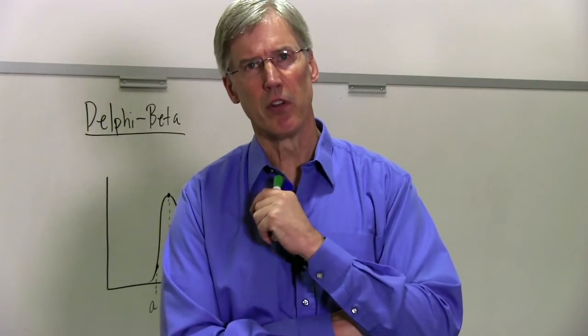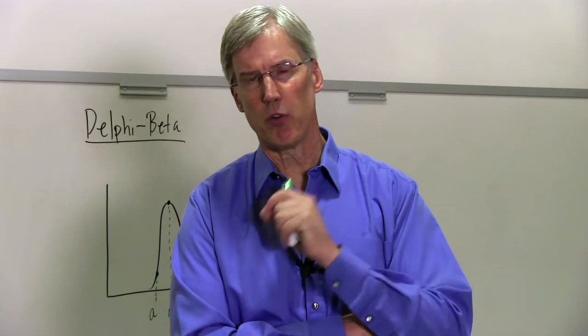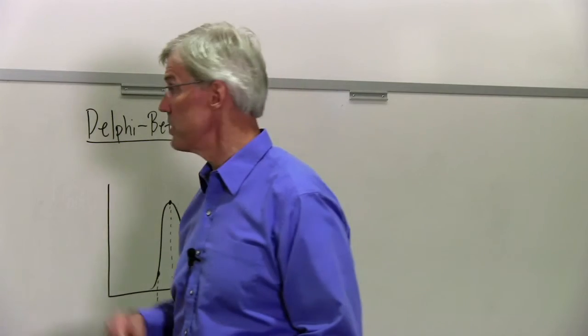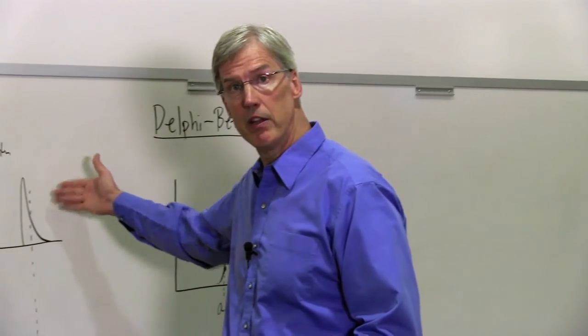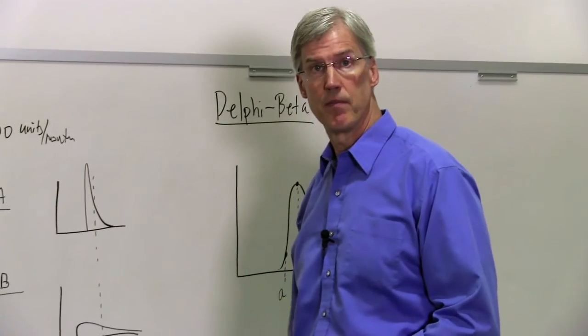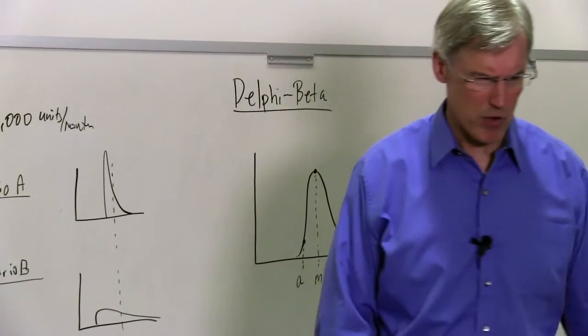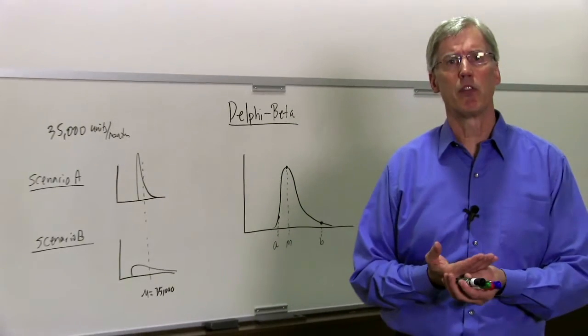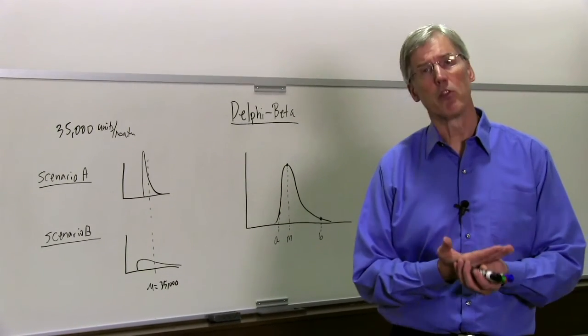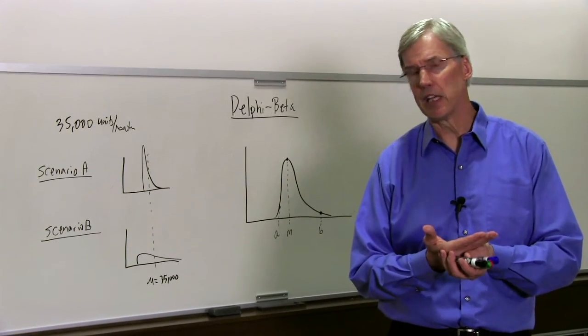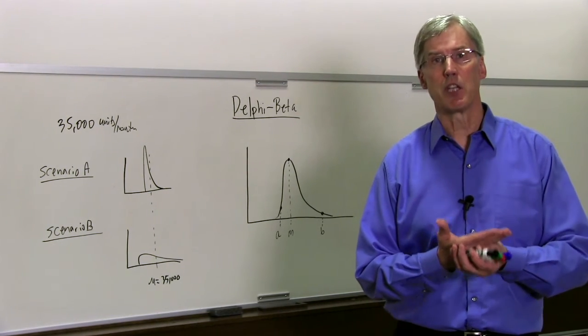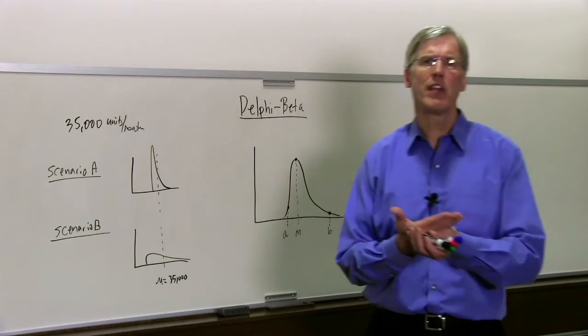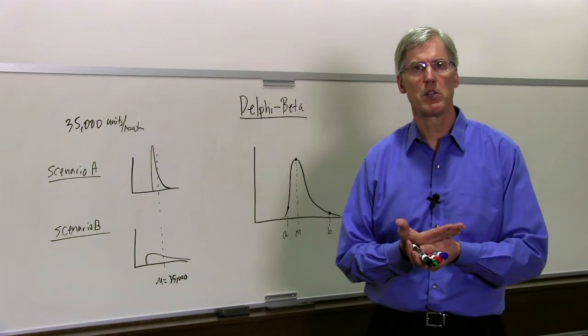In the past, we had all the flaws of groupthink, and we had a single number that could not distinguish between scenario A or scenario B. What do we have now? Well, now I've got 10, 15 pieces of paper. On each of those pieces of paper, I have an A, an M, and a B. I've tried to manage against groupthink, and what can I do with that A, M, and B?